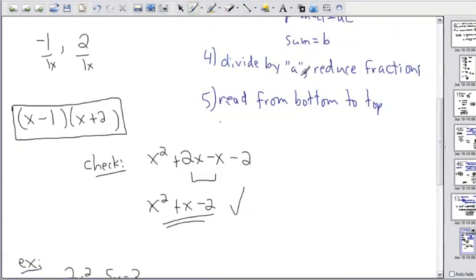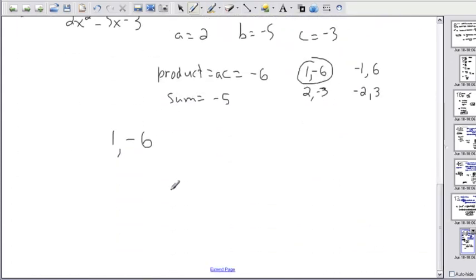Step 4 is to divide by a and reduce the fractions. And after that, we read bottom to top as last step. I want to divide them both by a. And in this case, a was 2. I divide them both by 2. Now I have to reduce the fractions. 1 half doesn't reduce. I can't divide them both by a number to make it smaller.